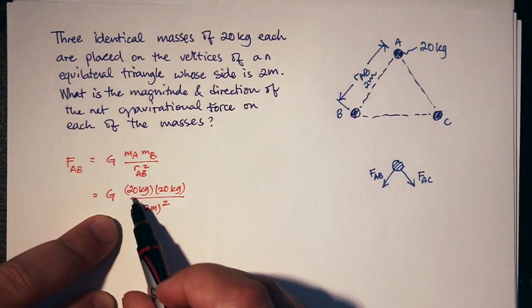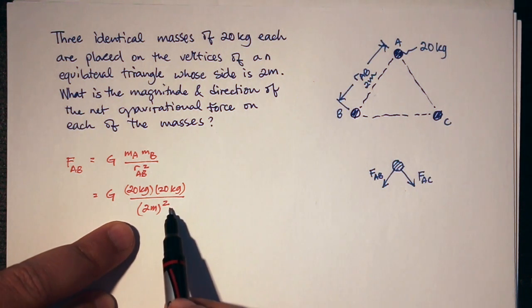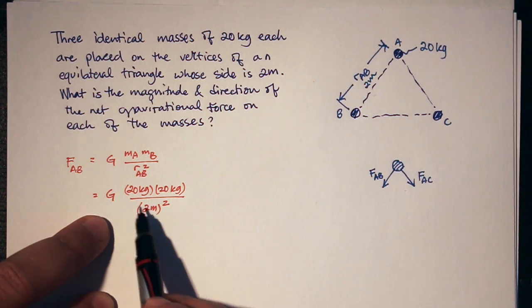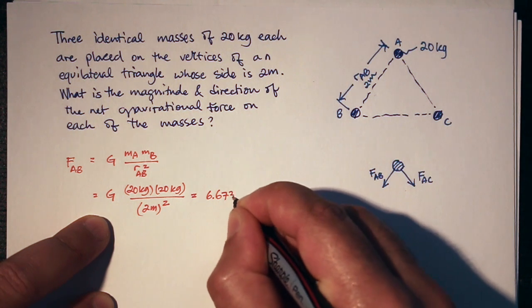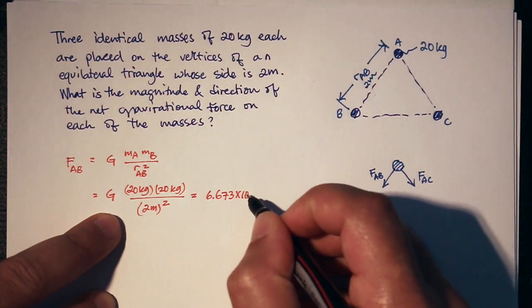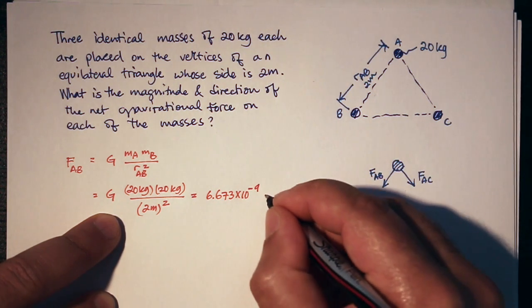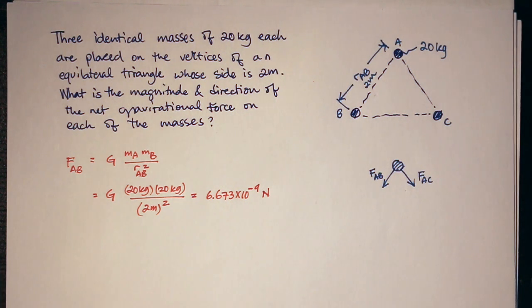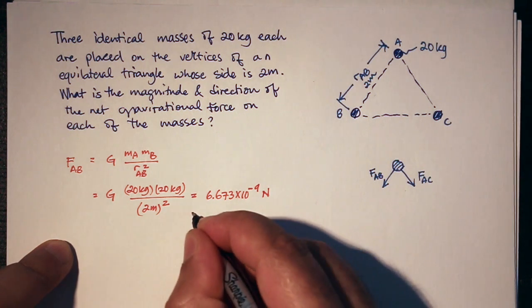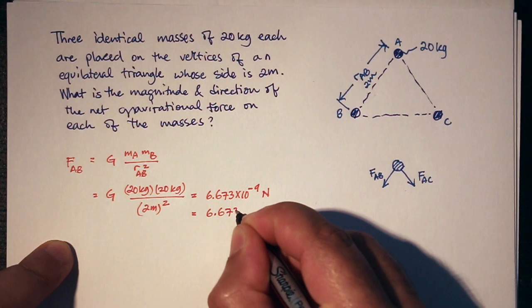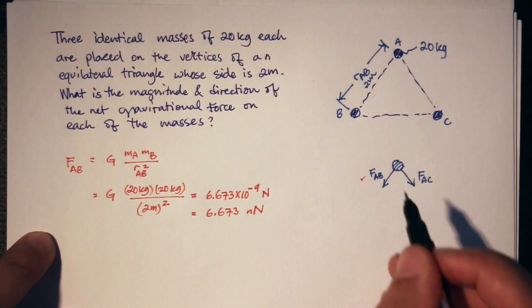I know that G is 6.67 times 10 to the minus 11. Looking at 20 times 20, that's 400 divided by two squared, which is four. So 400 divided by four is 100 times G. That equals 6.673 times 10 to the minus 9 newtons. Since 10 to the minus 9 is nano, I can write this as 6.673 nanonewtons. So I've figured out F_AB.